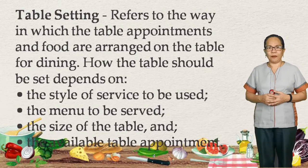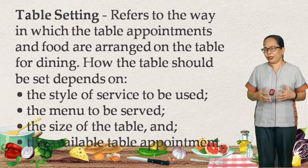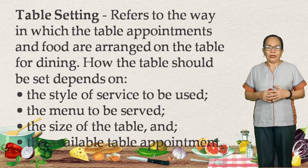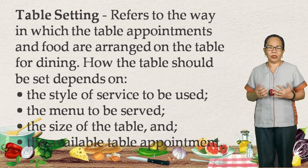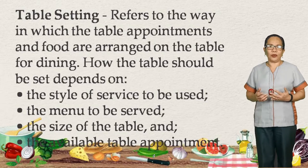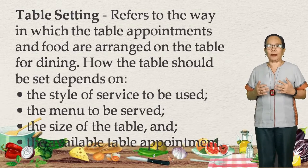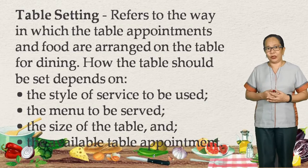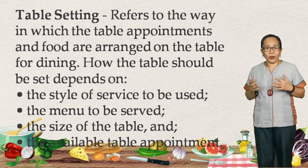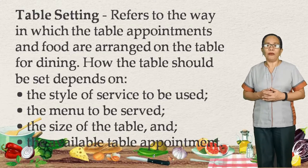On the previous quarter, we discussed all about the different table appointments and the different cutleries — different sizes of plates, different kinds of forks, spoons, cup and saucer, bowls, glasses, and so on. Those are the different table appointments needed when setting the table based on the customer's preference. Once we say table setting, it's not only the table appointments that have to be arranged, but so as with the food.